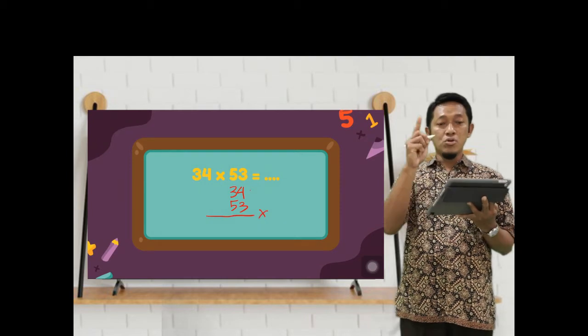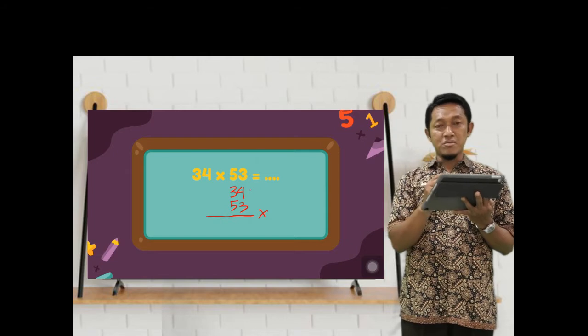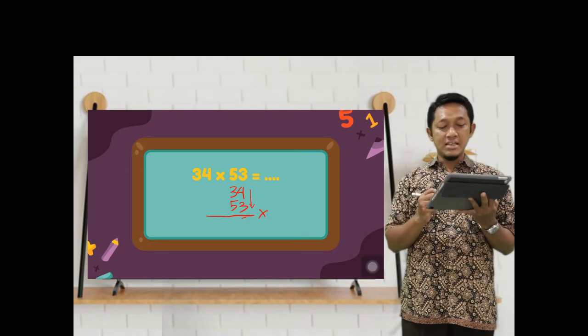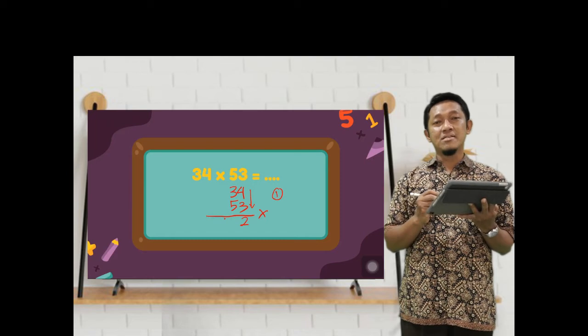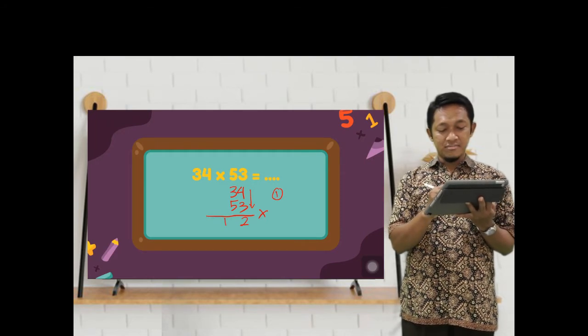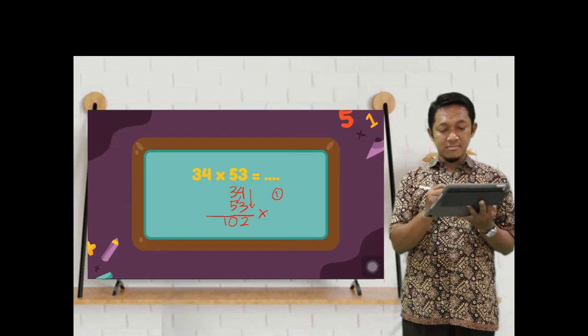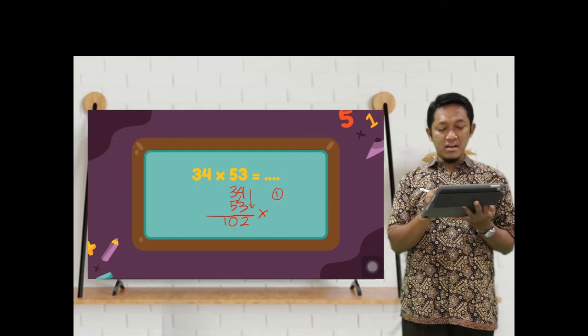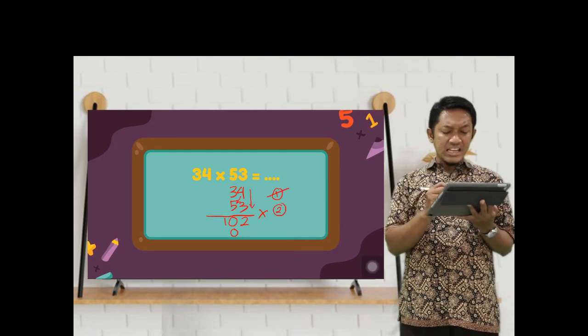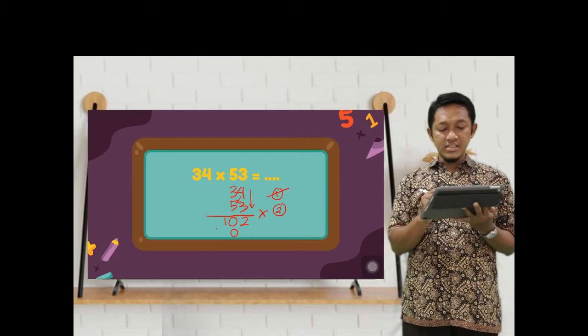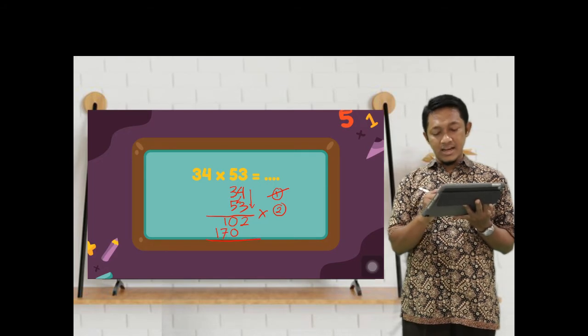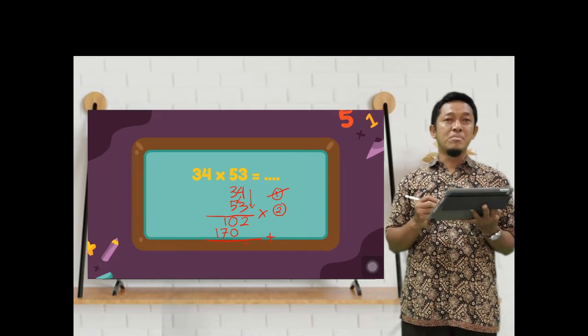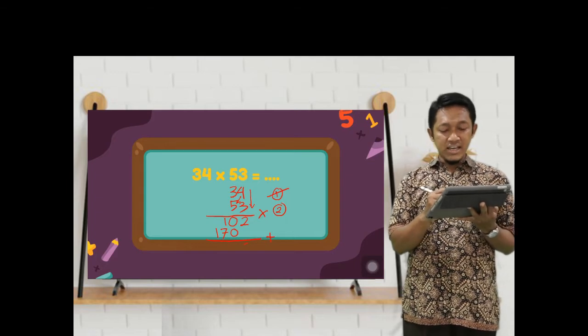Let's try together. Straight. Remember, you should multiply from the ones. 4 times 3 is 12. Save 1. 3 times 3, the result is 9 plus 1 is 10. Then diagonal. Diagonal, 4 times 5 is 20. Save the tens. Next, 3 times 5, the result is 15, plus 2, so there will be 17.